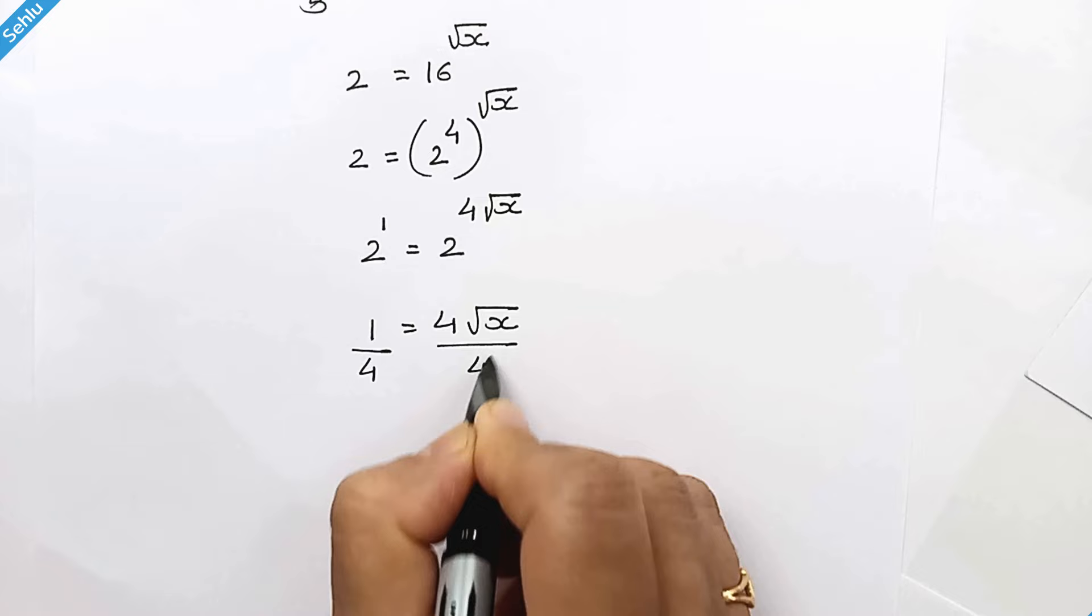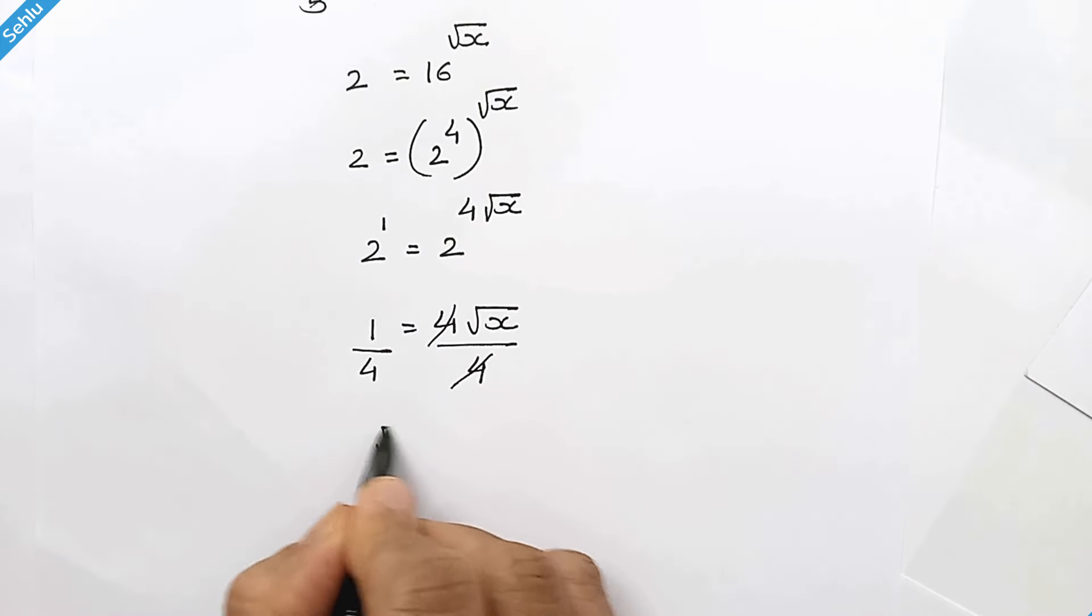Divide by 4 both the sides, so we have square root of x is equal to 1 over 4.